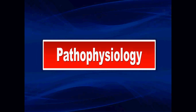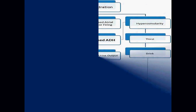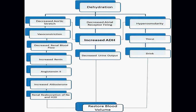The body responds to dehydration in three ways. First, increased osmolality triggers physiological thirst, prompting drinking to restore blood volume. Second, increased hyperosmolality stimulates antidiuretic hormone (ADH) secretion, decreasing urine output to preserve blood volume. Third, the atrial natriuretic peptide firing decreases in dehydration, further increasing ADH secretion and reducing urine output.